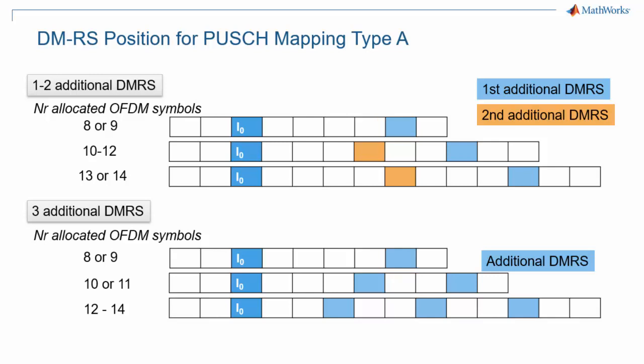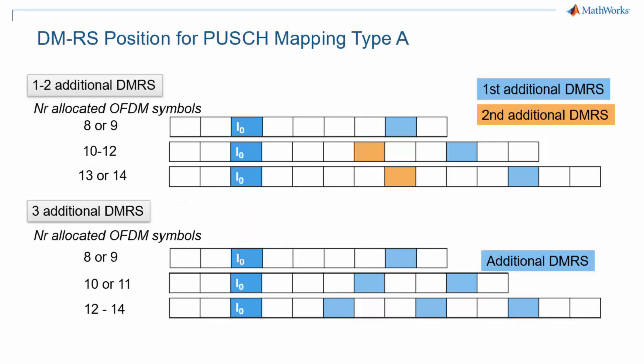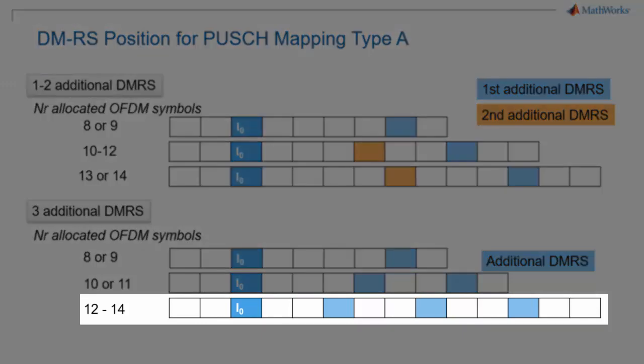Here we can see the position of DMRS symbols for PUSCH allocations that use mapping type A. The first DMRS symbol is always the second or third symbol of the slot. If one additional DMRS symbol is configured, its position depends on whether the PUSCH is allocated 8 or 9, 10 to 12, or more than 13 symbols. If the allocation is shorter than 8 symbols, no additional DMRS can be allocated. Similarly, the second additional DMRS can only be added if the allocation is at least 10 symbols long. The only configurations where you can have four symbols with DMRS are those with at least 12 symbols allocated to the PUSCH.